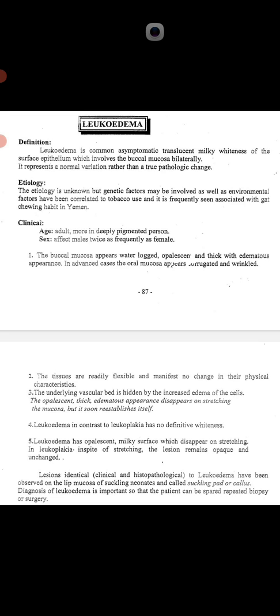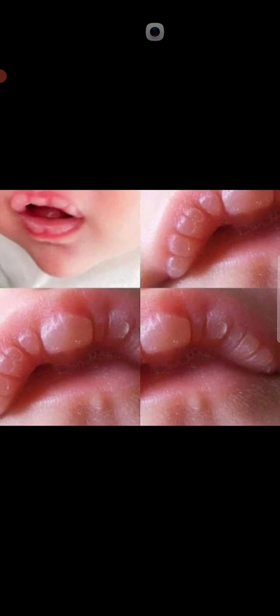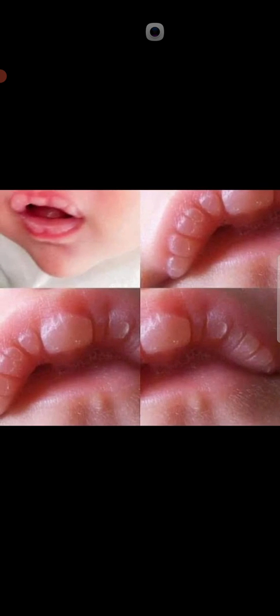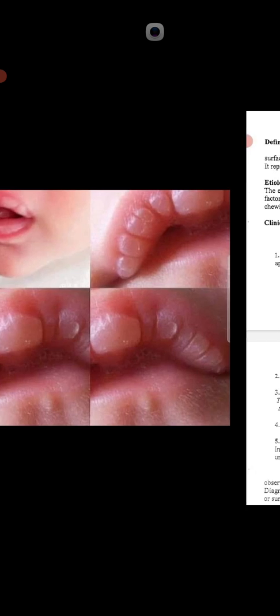Regarding differential diagnosis — conditions which look clinically and histopathologically similar to leuco edema — a lesion identical both clinically and histopathologically to leuco edema has been observed on the lip mucosa of suckling newborns. These are called suckling pads or calluses, found on the lip mucosa, identical to leuco edema due to fluid accumulation.